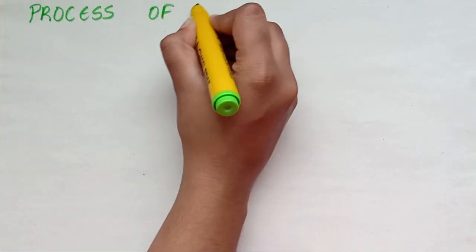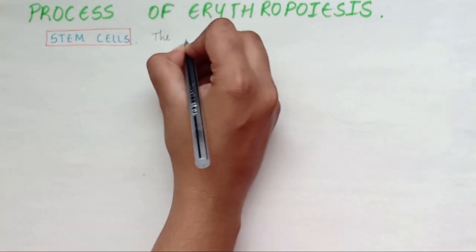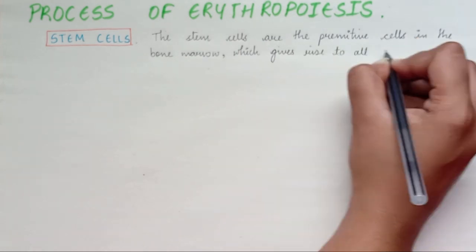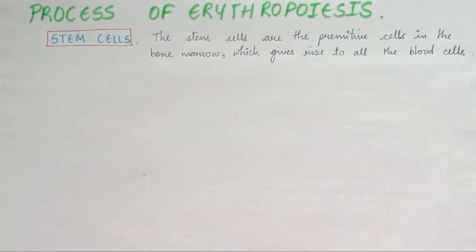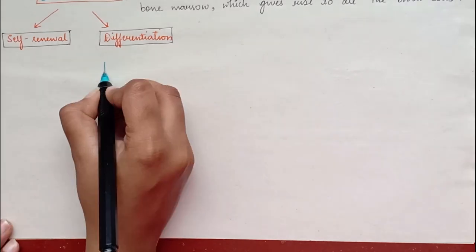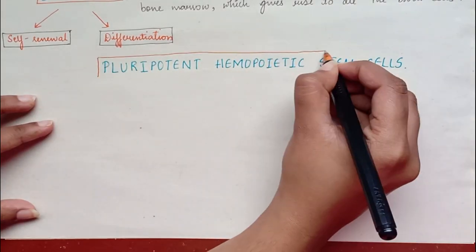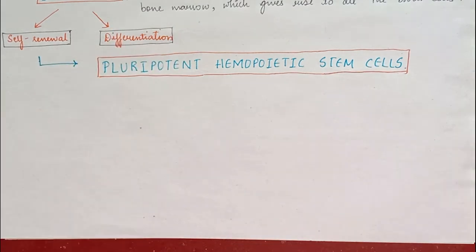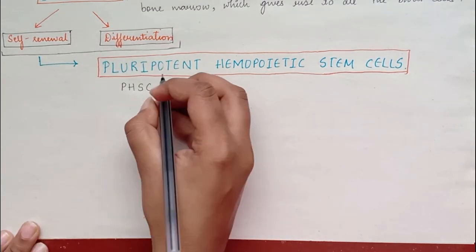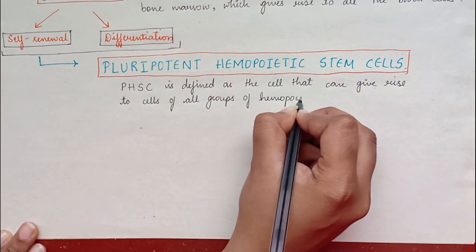Process of Erythropoiesis — Stem cells. The stem cells are the primitive cells in the bone marrow which give rise to all the blood cells. A stem cell is defined as a cell which is capable of both self-renewal and differentiation. Pluripotent hematopoietic stem cells are derived from the stem cells. These are defined as cells that can give rise to cells of all groups of hematopoietic cells like myeloid cells and lymphoid cells.